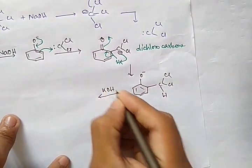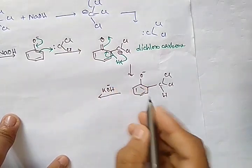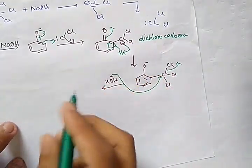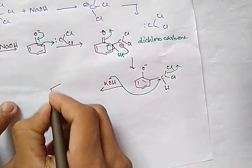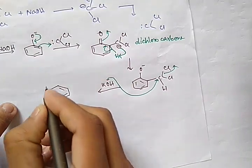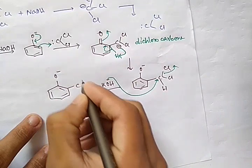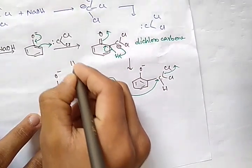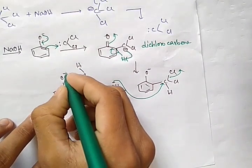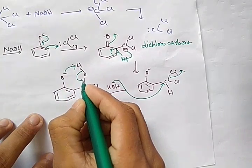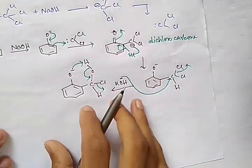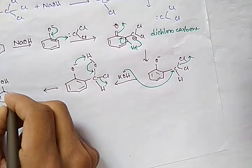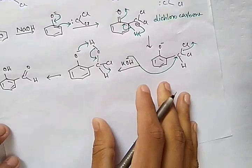Base acts as a nucleophile and attacks, while chlorine leaves as a leaving group. We get an intermediate with O⁻, CHCl, and OH. The negative charge takes the remaining proton, and the second chlorine is removed. So the final product is a compound with an OH group and a CHO (aldehyde) group — that is, salicylaldehyde.